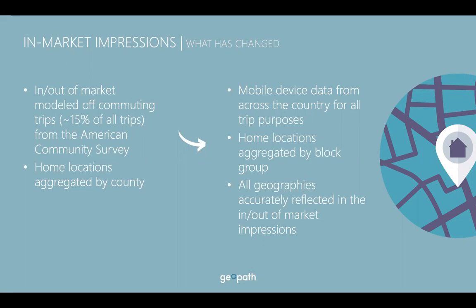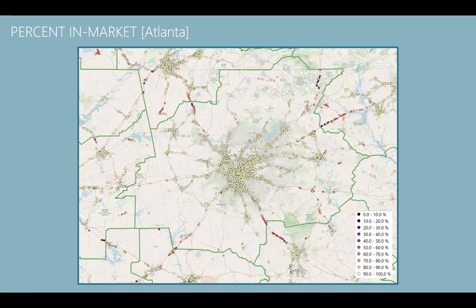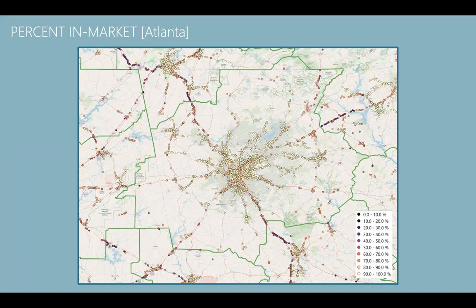In the past, in-market and out-of-market impressions were modeled off commuting trips from the American Community Survey, and home locations were aggregated by county. Now, using mobile device data provides insight for all trip purposes and ties back to home locations aggregated by block groups. Geopath can tie these trips back to demographic profiles for audience data, and also accurately reflect in-market versus out-of-market impressions. In this screenshot of the Atlanta market, you can see how mobile data has evolved our understanding — a much greater amount of out-of-market impressions have been counted, showing many more people traveling from outside the market than previously estimated.